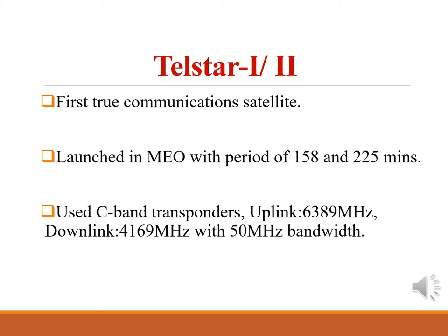They were launched in Medium Earth Orbit (MEO) with a period of 158 minutes for Telstar 1 and 225 minutes for Telstar 2. The uplink was at 6389 MHz and the downlink was at 4169 MHz with 50 MHz bandwidth. The satellites carried solar sails and batteries that allowed continuous use of a single transponder.